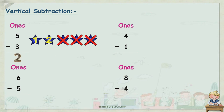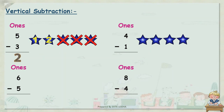Next, that is 4 minus 1. Let's count: 1, 2, 3, 4. We have to subtract 1, so let's cross out 1. How many are remaining? 1, 2, and 3. So our answer is 3. It is so easy to understand, isn't it?